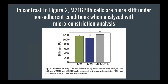This next figure was puzzling because it goes against what was said previously. It shows that the M21-GP2B cells, which lack the alpha v beta 3 integrin, actually grow more stiff in non-adherent conditions. Importantly, in this figure they used micro-constriction analysis rather than the atomic force microscopy used before.